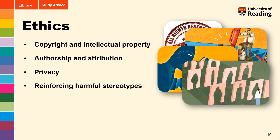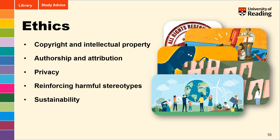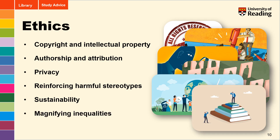AI models are trained on existing text or images online, and like any algorithm, they are likely to repeat predominant patterns in their training data set. They may therefore reproduce biased ideas that have a prolific presence online, such as misogyny, racism, homophobia, or xenophobia. In order to develop and maintain these tools, there is a significant cost in energy and computing resources — the justification of this infrastructure cost is being questioned in view of other priorities, such as global energy needs and the climate crisis. There are also questions about who is accessing these AI systems, who will have access in the future, and who will benefit most from their development and use.